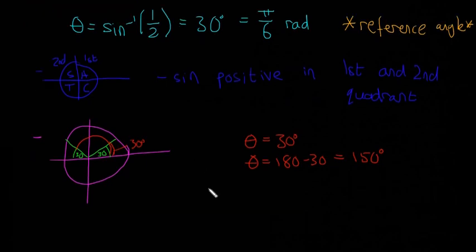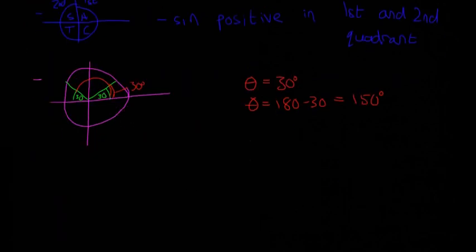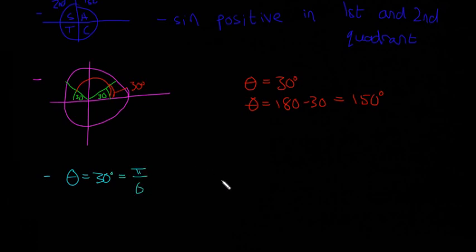And now there's one extra step in this video just because we have to change it into radians. So that means theta equals, so I'm going to write 30 degrees equals pi over 6 radians or else theta equals 150 degrees equals how many radians is the question. So I'll write radians there.